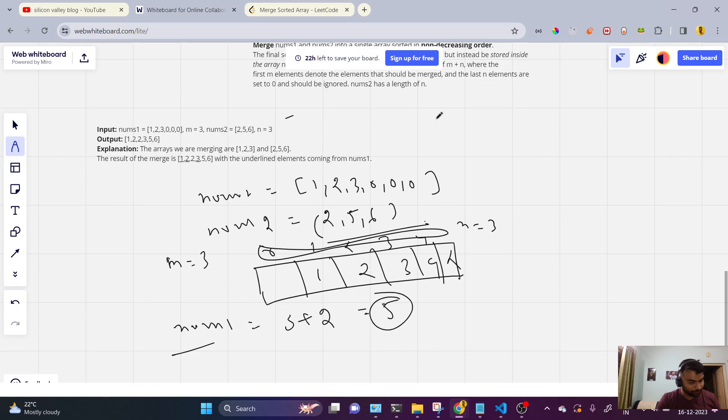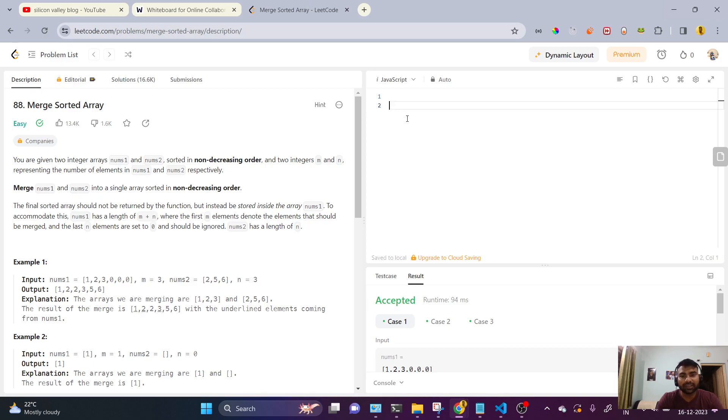How we can write this effective solution? So we'll go here and we'll approach the solution. We'll see where merge is equal to function nums1 and m and nums2...